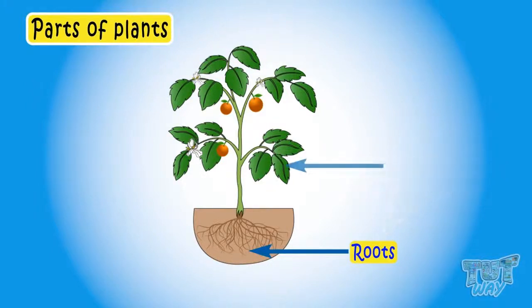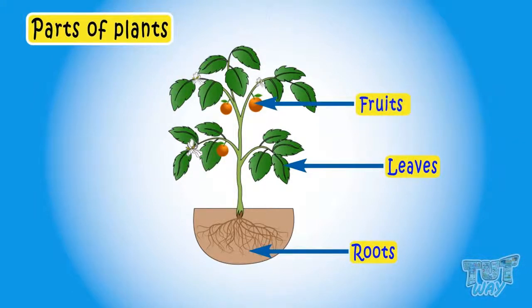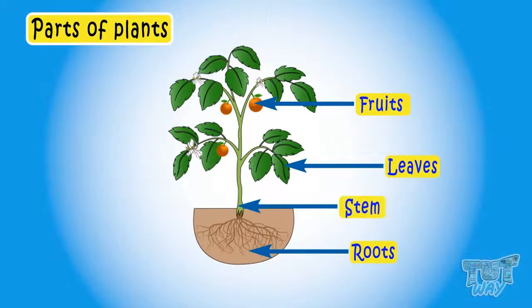These are leaves of plants. Leaves are called the food factory of the plants. Leaves help plant prepare its food using the sunlight. These are fruits of plants. Fruits store the food of the plant.